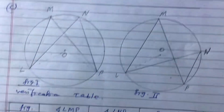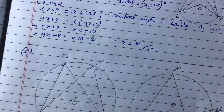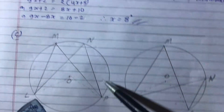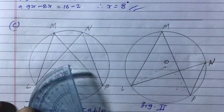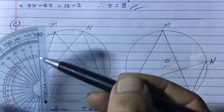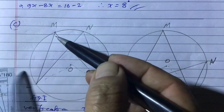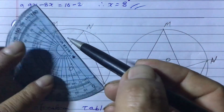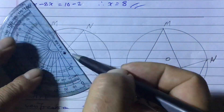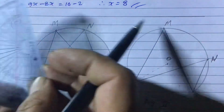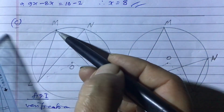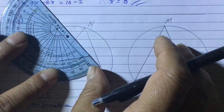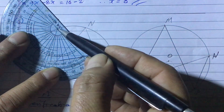Some of you may not know how to measure angles, so let me teach you. We are going to measure inscribed angle LMP. To measure it, there is a baseline on your protractor. We match this line with either MP or ML, and the center of the protractor must be placed exactly at point M.